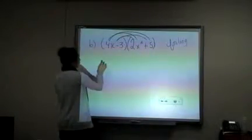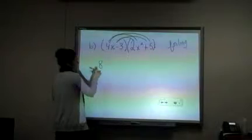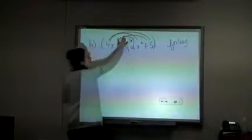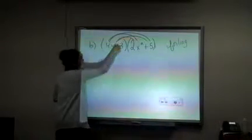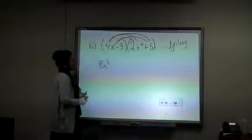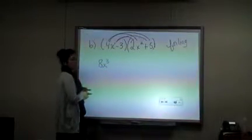Starting with the 4x, 4x times 2x squared. So you're starting with the 4 times 2, which is 8. And then you have x times x squared. So x times x squared actually gives you x to the power of 3, because there's a little 1 here. And if you remember your laws from last year,